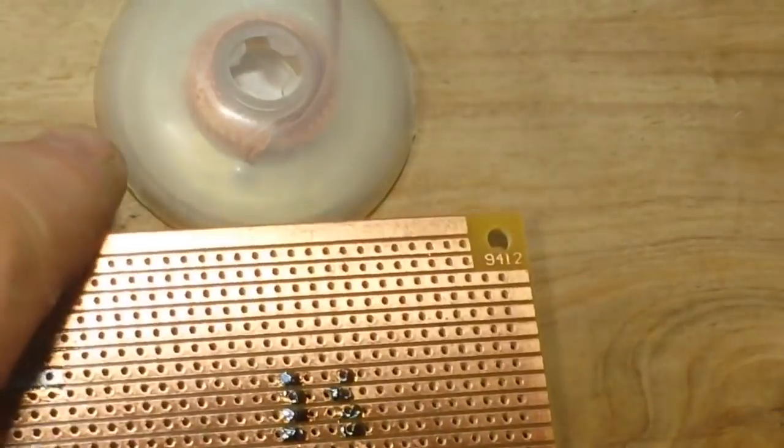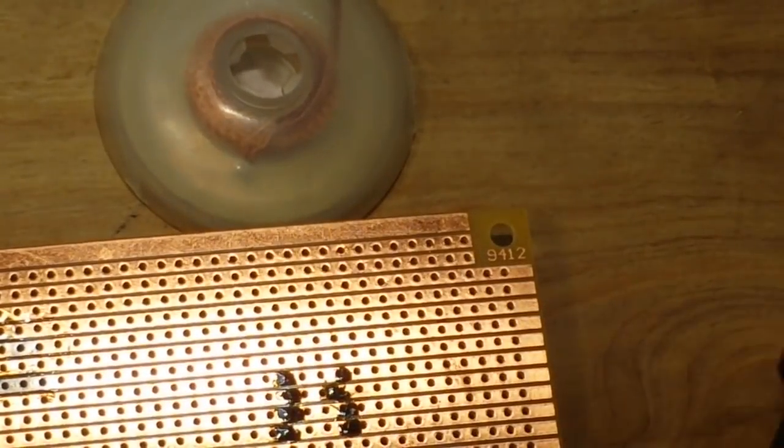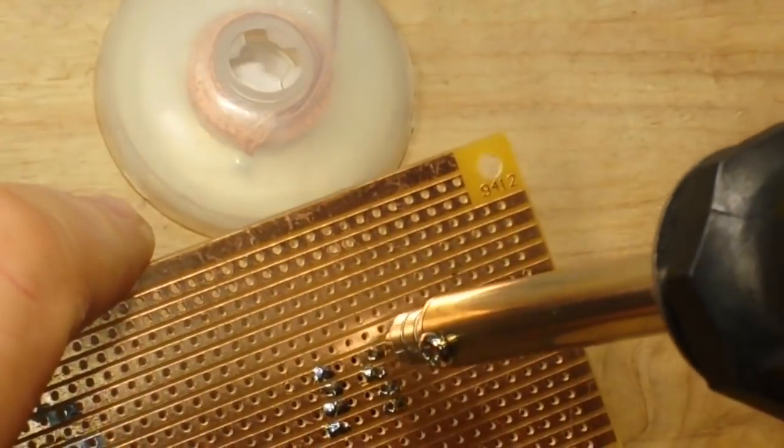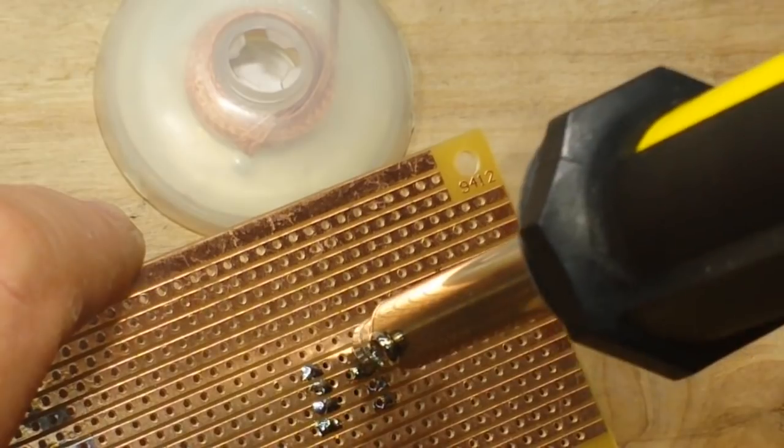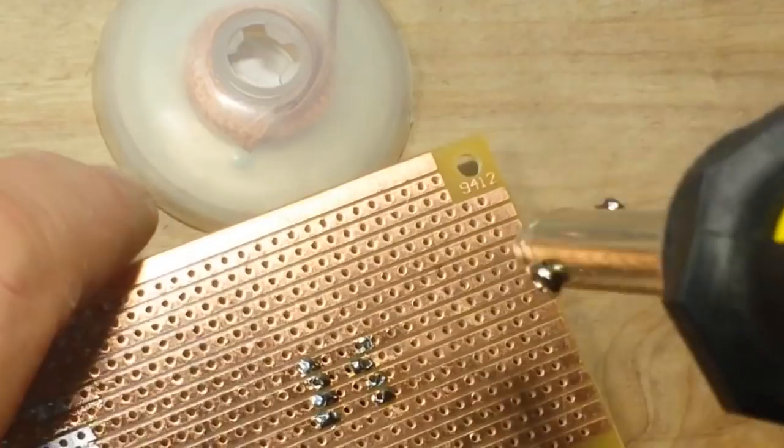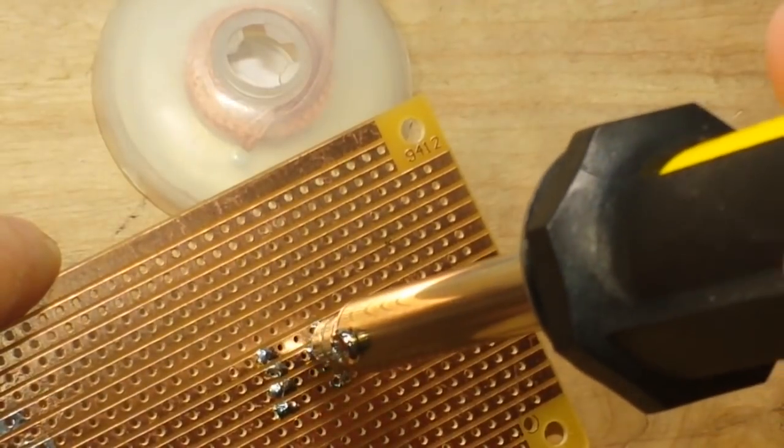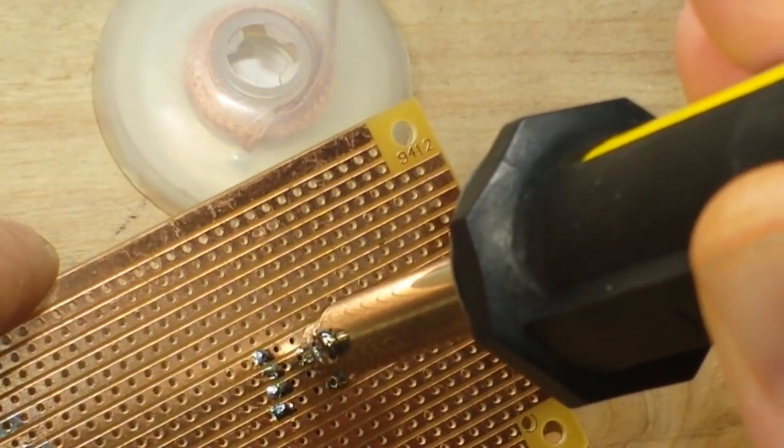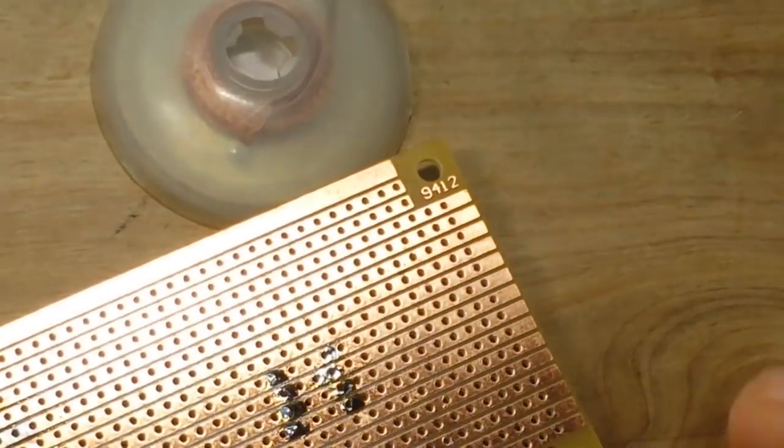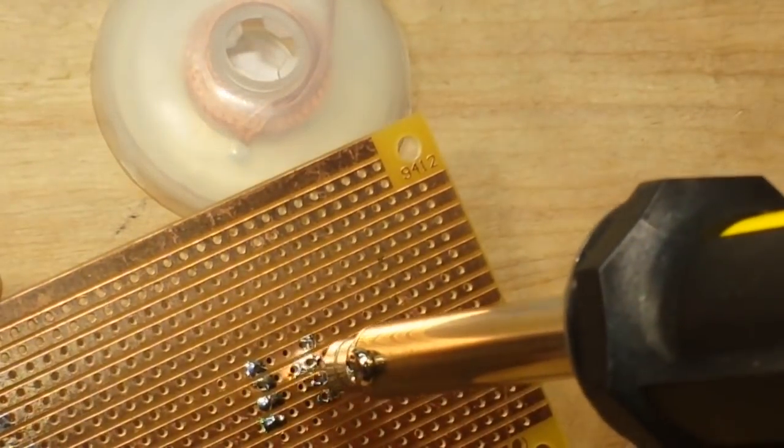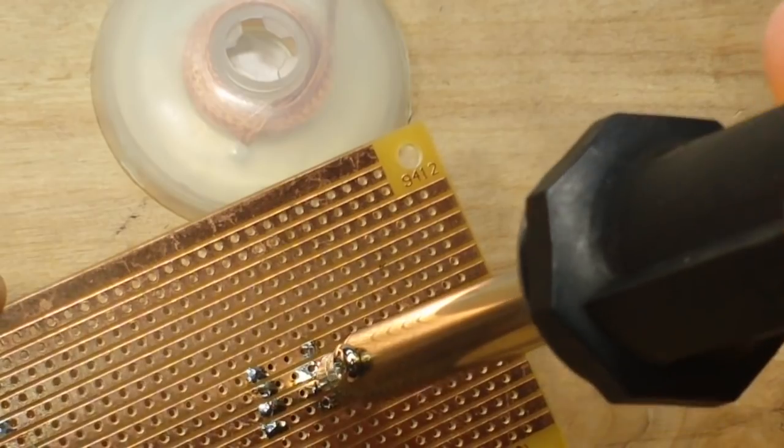Now we've got this IC here, and ICs that are soldered in can be one of the trickier things to deal with. So we'll see what kind of job this does on it. For this I prefer the hollow needles, like I said, we'll see how this does.